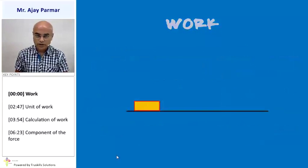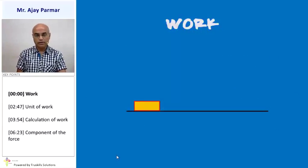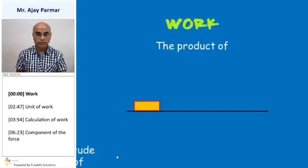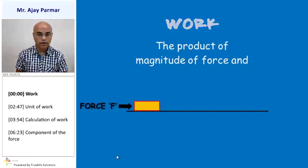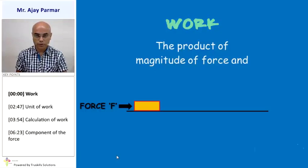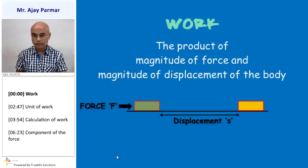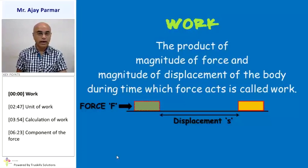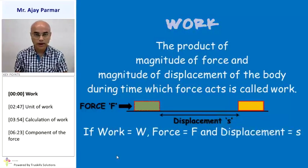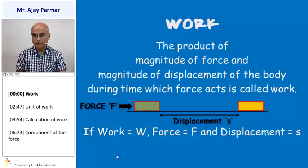Let us understand work mathematically — that means write the formula for work. Work is the product of the force that is being applied and the magnitude of displacement of the body under the effect of that force. If we represent work by W, force by F, and displacement by S, then W = F × S.